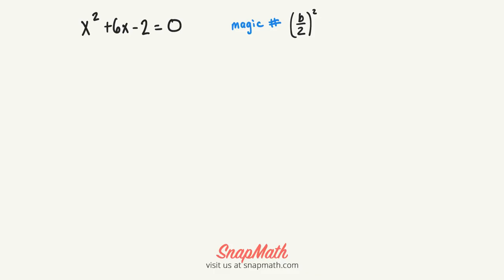So the first thing we want to do is we want to get the c value to the other side. So we're going to add 2 to both sides.